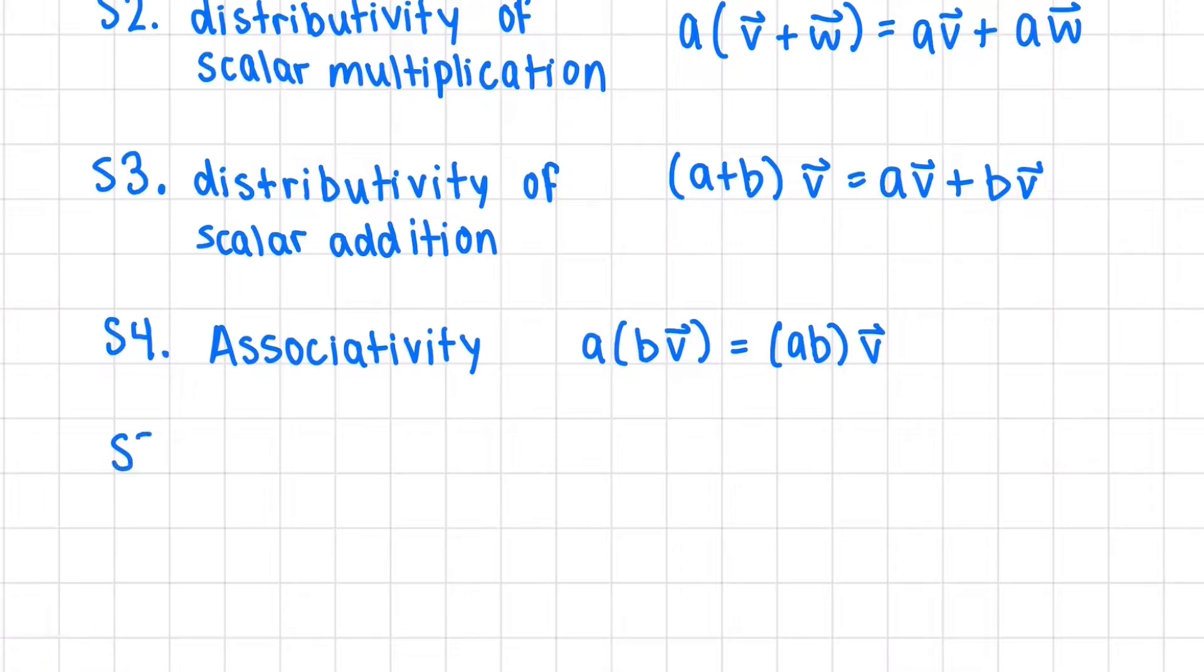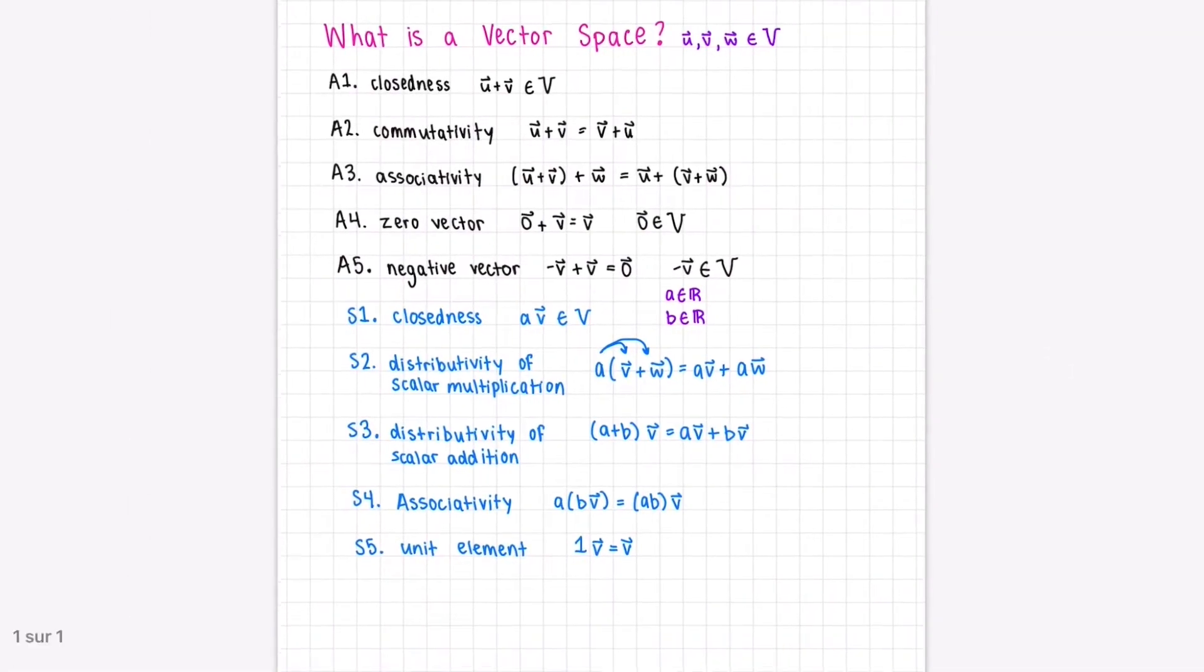And lastly, we have a unit element. This means that one times any vector, arbitrary V, equals V. One times the vector does nothing. And that concludes the 10 axioms.